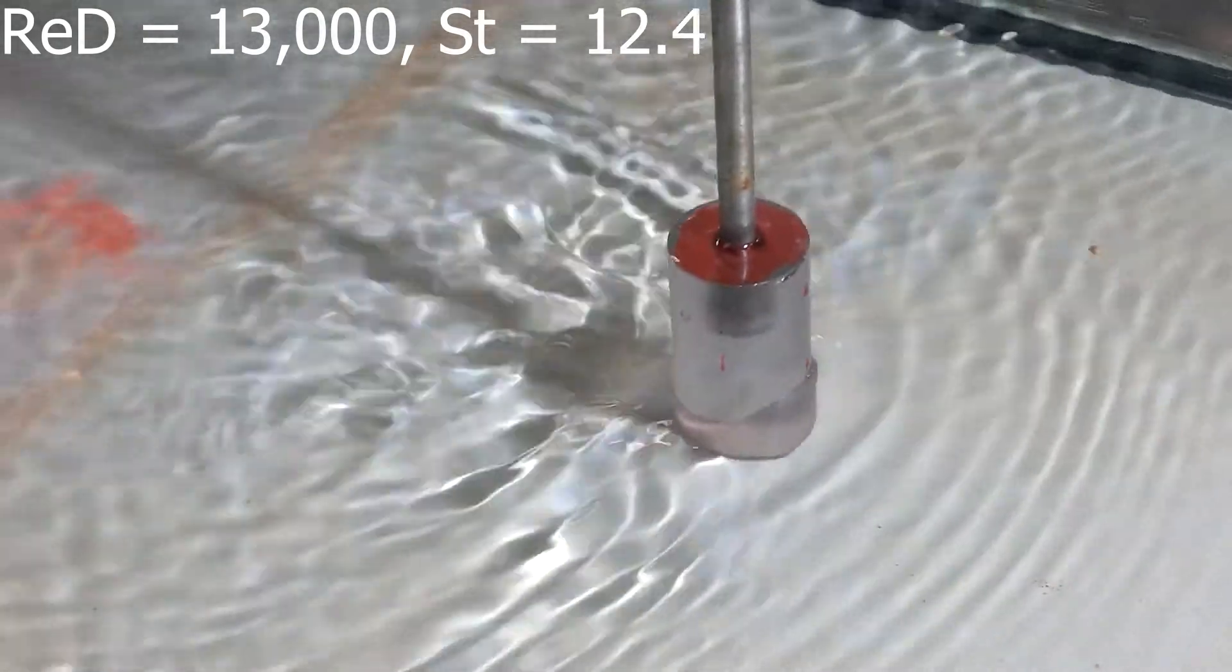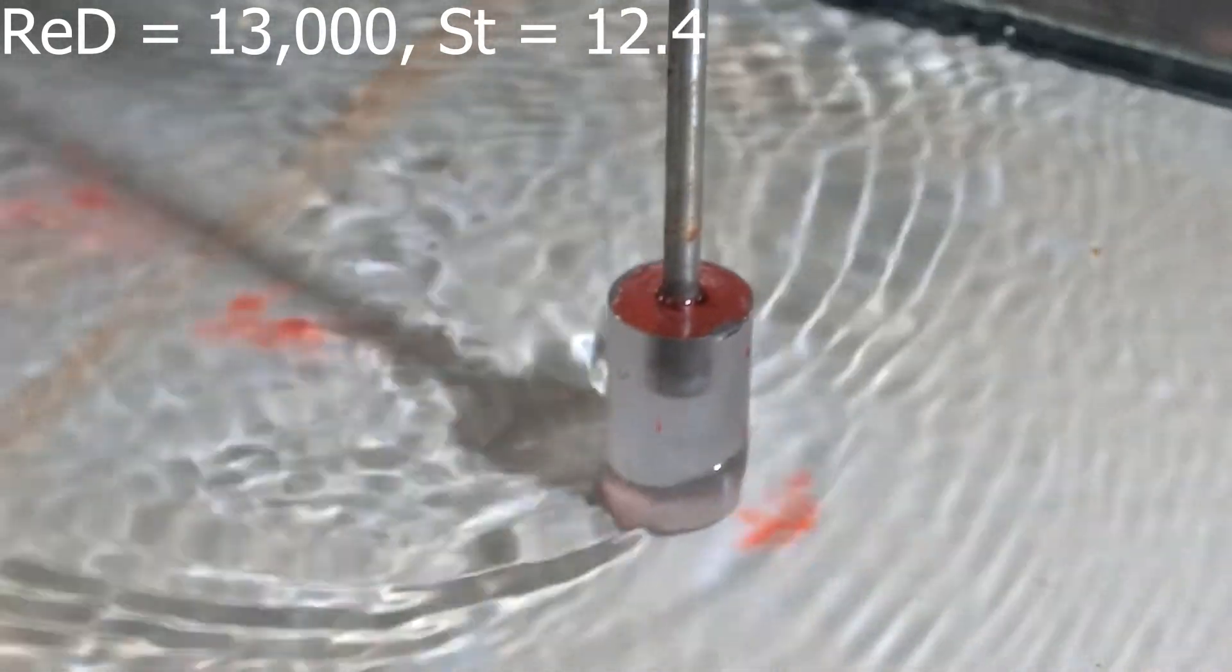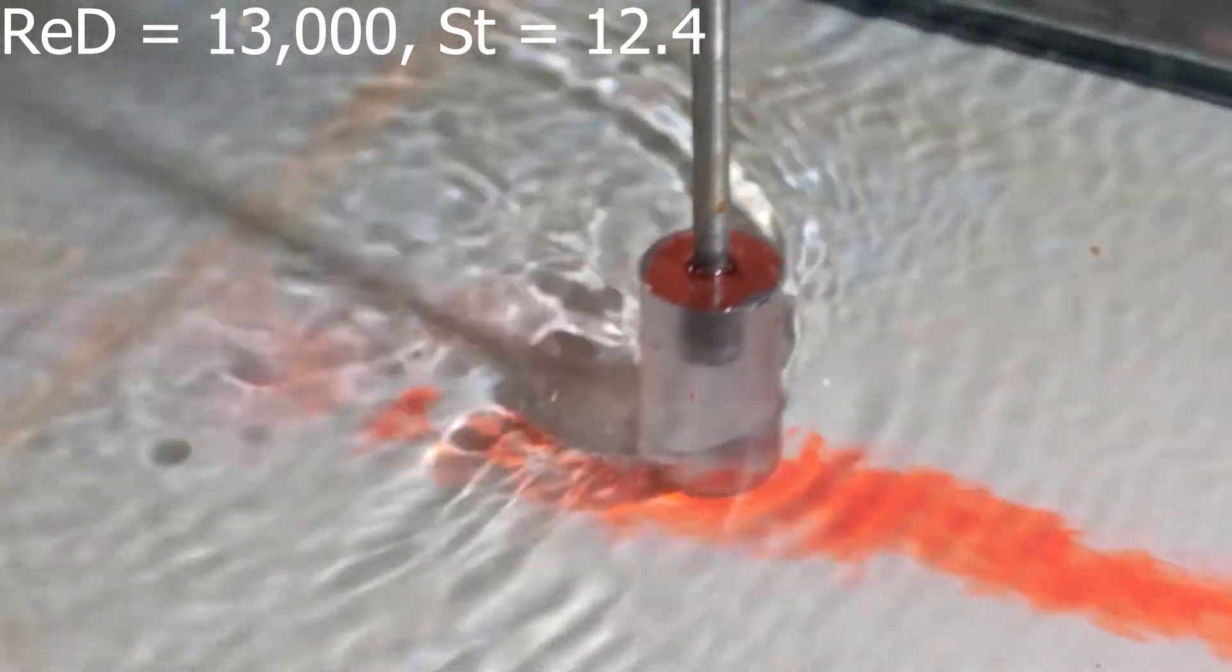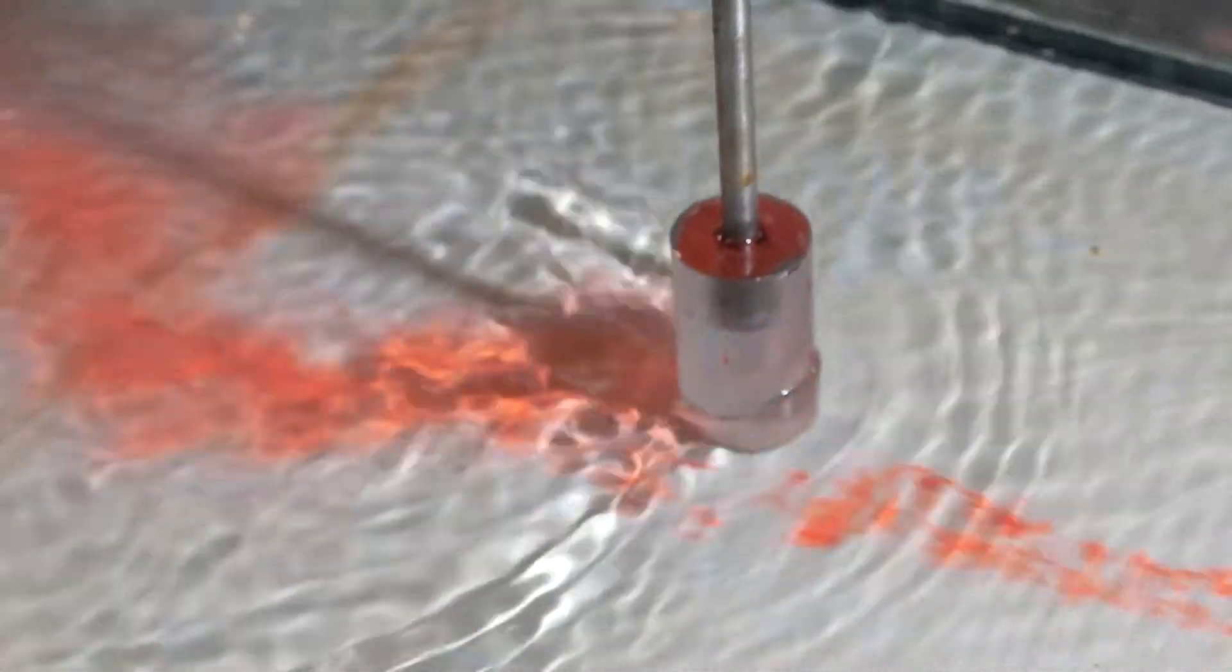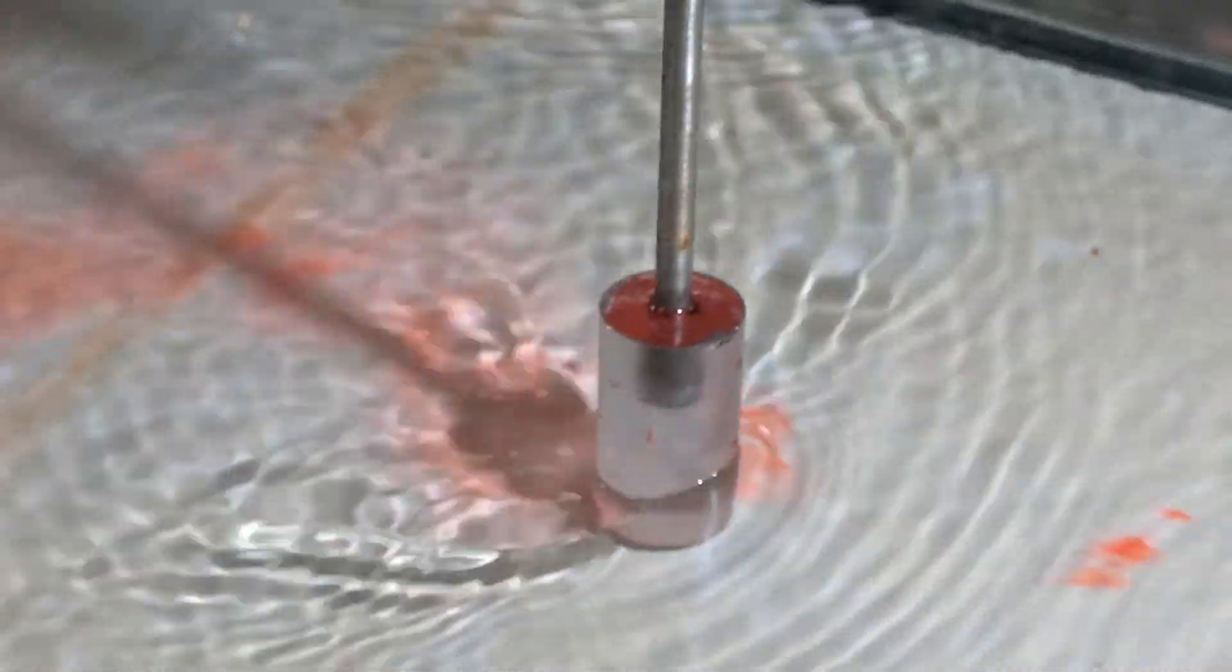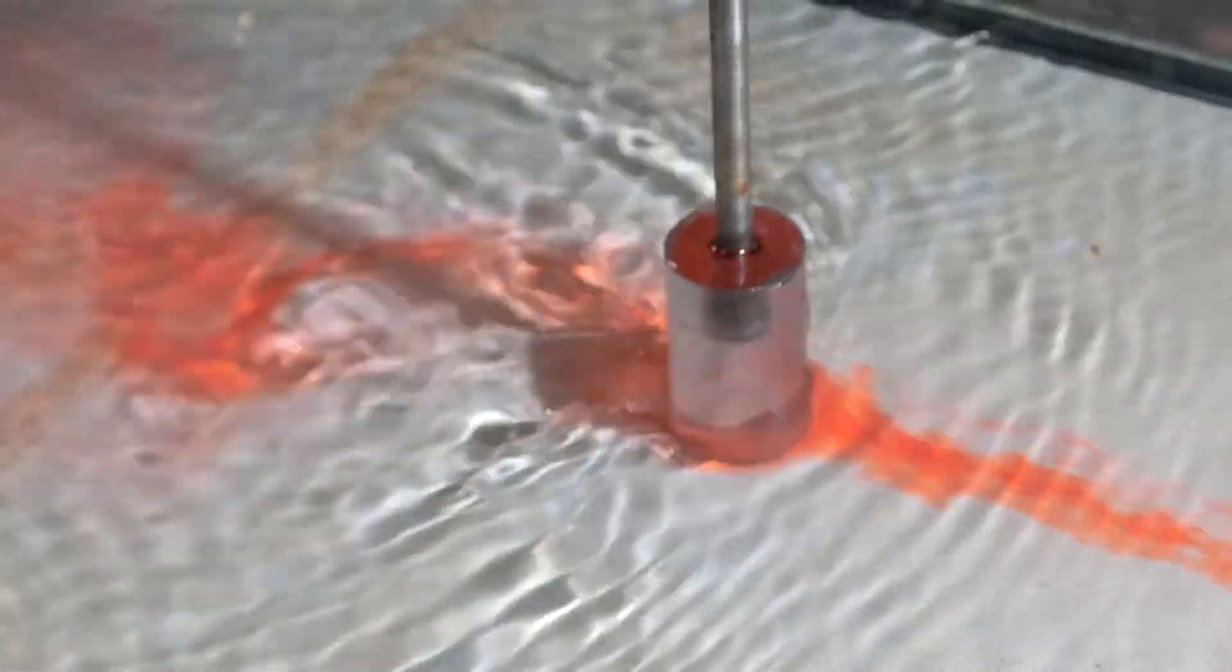The second movie shows the self-sustained oscillations of the cylinder. Dye injection upstream of the cylinder helps to illustrate the flow around the cylinder as well as the strong turbulent mixing in the wake of the oscillating cylinder.